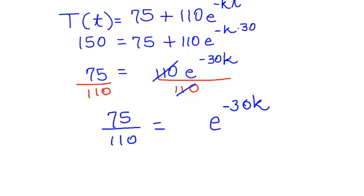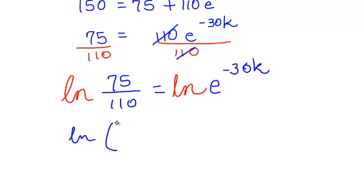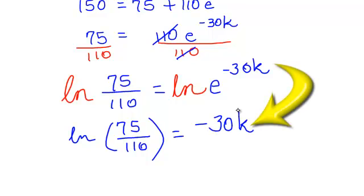I'm trying to isolate my E. So I will have 75 over 110. On the right side the 110s cancel out. I have e to the negative 30K. I am still searching for K. K is up here in the air, in the exponent. I need to get it down. Remember our properties for logarithms or natural logs? The natural log of e to whatever is a whatever. So I'm going to take the natural log of both sides. Of course we know if you take the natural log of the left side, you have to take the natural log of the right side.